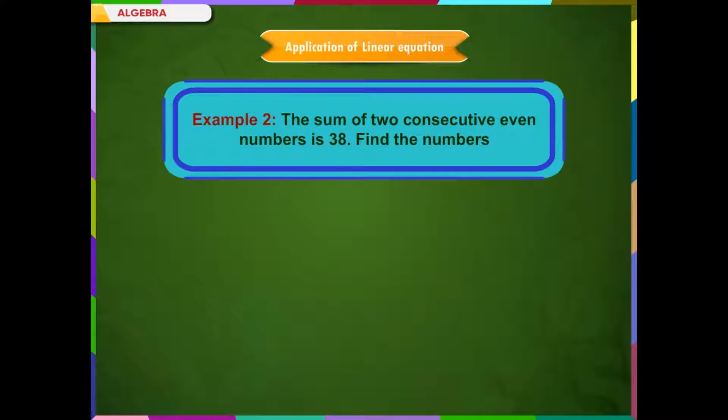The sum of two consecutive even numbers is 38. Find the numbers. Solution. Let the first even number be x.